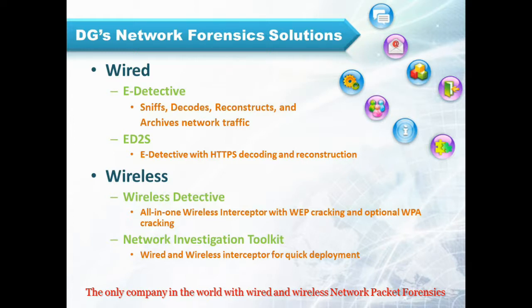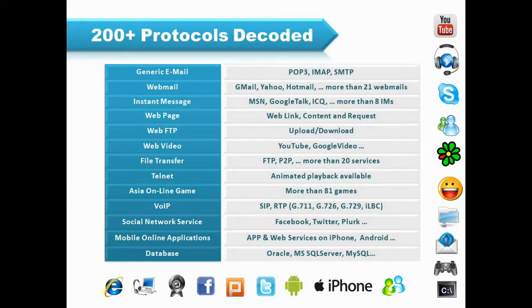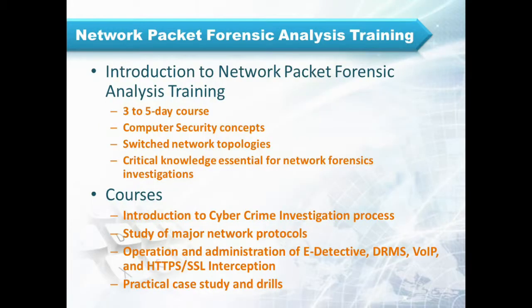Decision Group products offer decoding and reconstruction of over 200 different Internet protocols, including POP3, Gmail, YouTube, and Peer-to-Peer, as well as Voice over IP, Facebook, and mobile online applications from iPhone and Android.